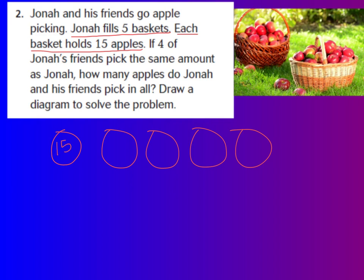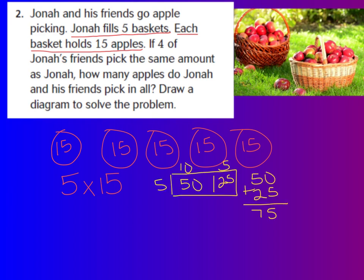Now, my first step is to figure out, well, how many apples is this? So I would need to say 5 times 15 to figure out how many apples Jonah picks. Now, I used my box model to help me find out what 5 times 15 was, and I've got 75. So that's step 1.